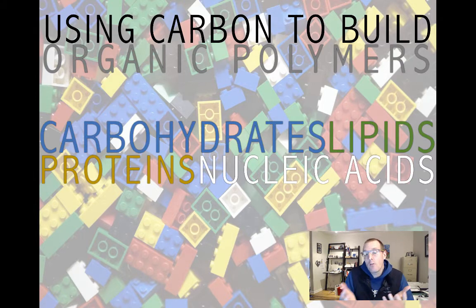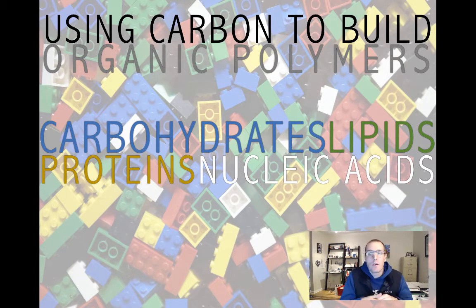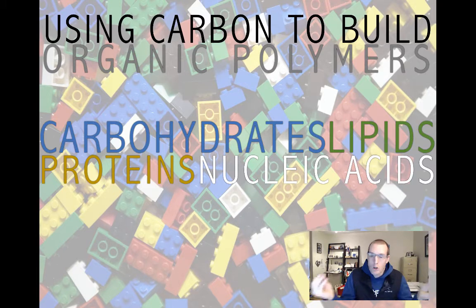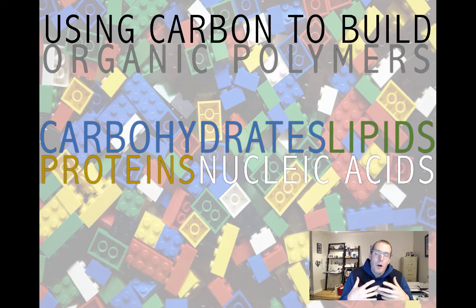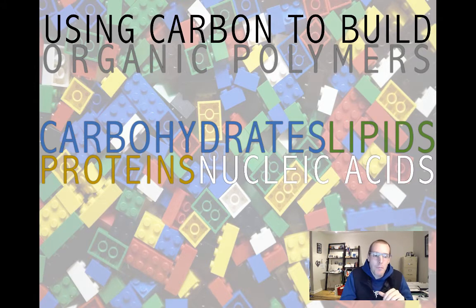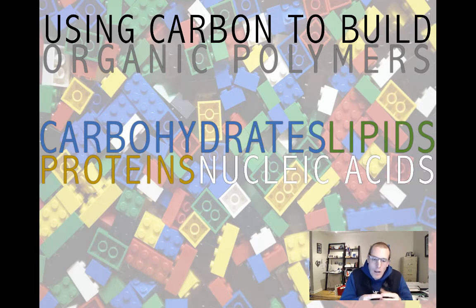Those organic polymers — that's my fancy way of saying something you already know. You've heard of proteins, complex carbohydrates, DNA and RNA. An organic polymer is just a long chain of some basic building blocks. When we talk about complex carbohydrates like cellulose, starch, and glycogen, complex lipids, proteins, and nucleic acids — those are all built using basic building blocks, which we call monomers in biological and organic chemistry terms.